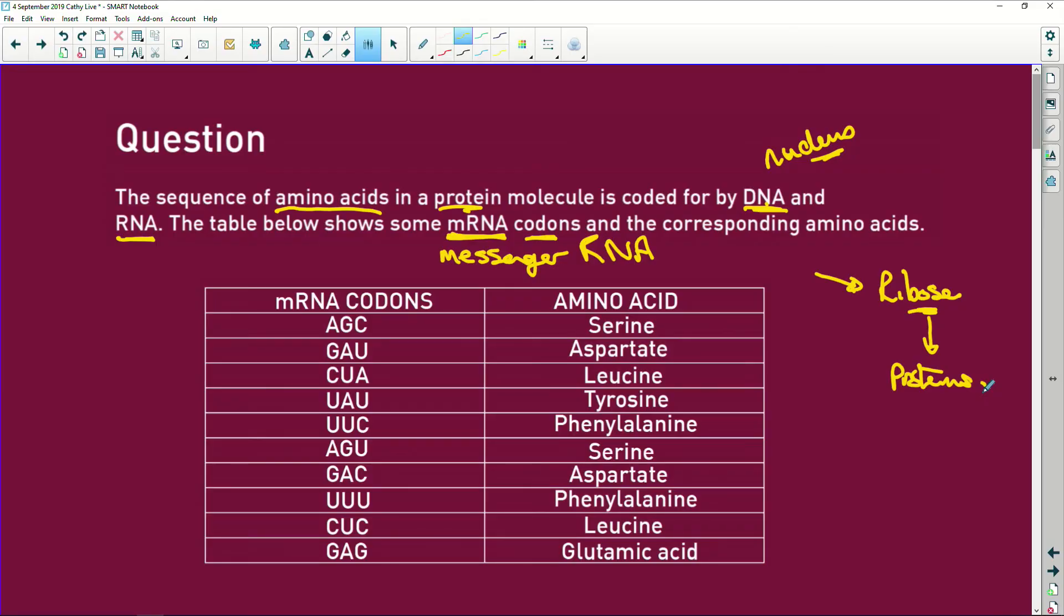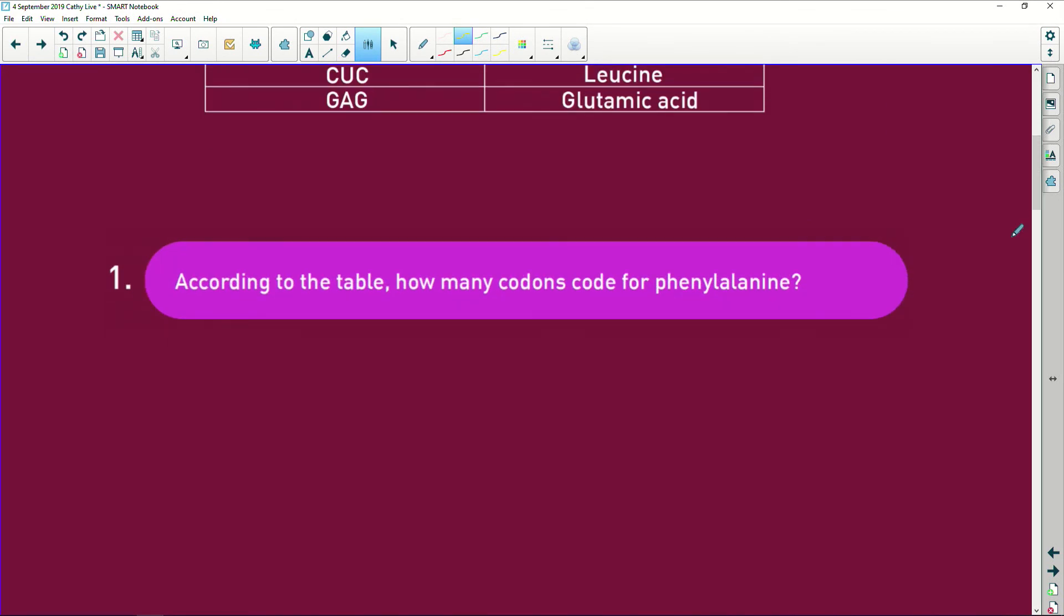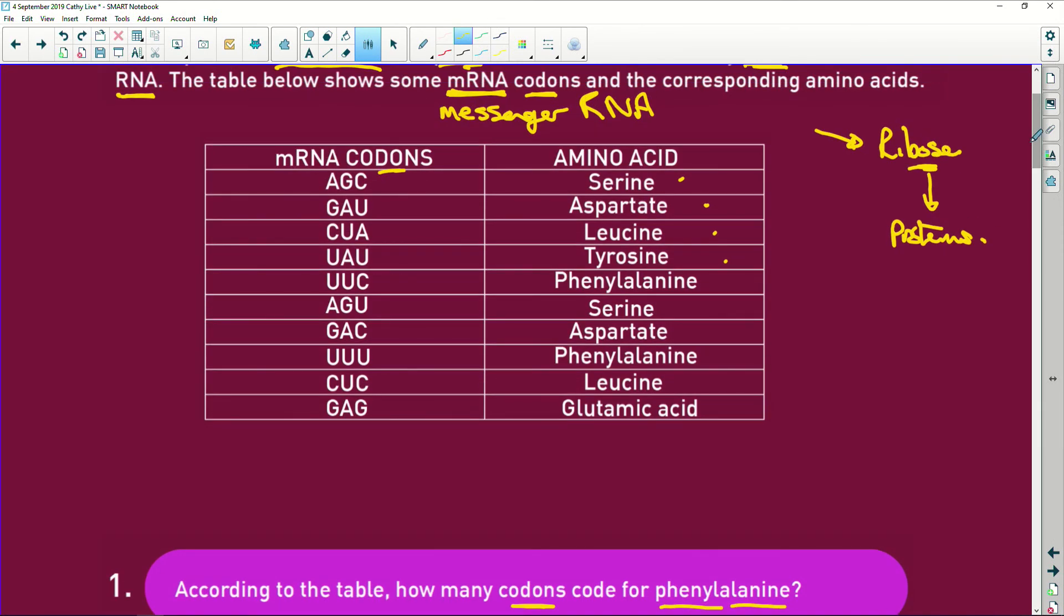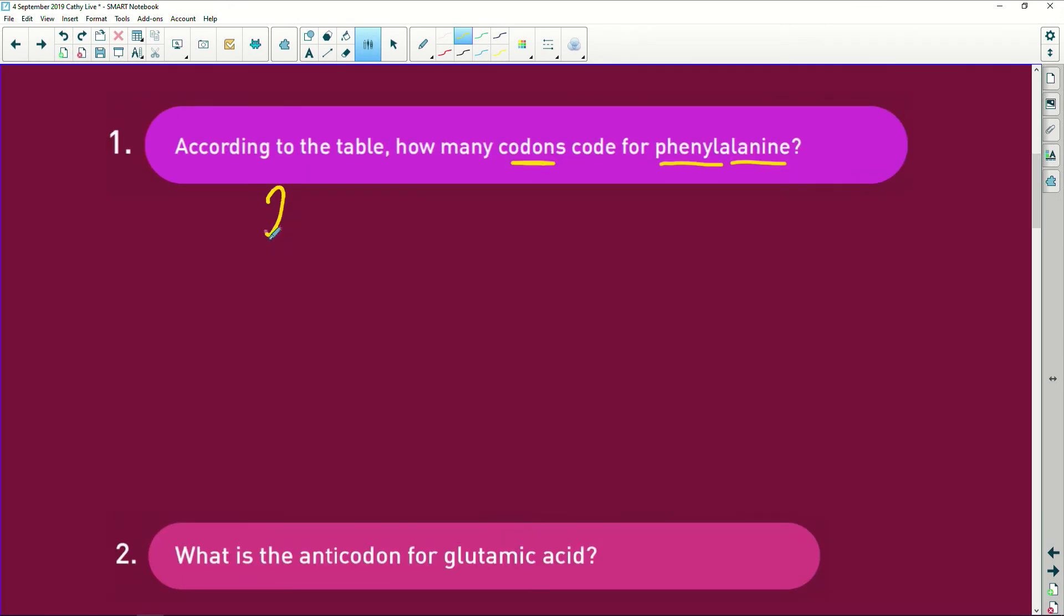What they've given you here is a bunch of mRNA codons and the amino acids that they will code for. According to the table, how many codons code for phenylalanine? Let's look, we've got phenylalanine here, phenylalanine here, and phenylalanine here. So it's UUC and UUU, so we have two codons.